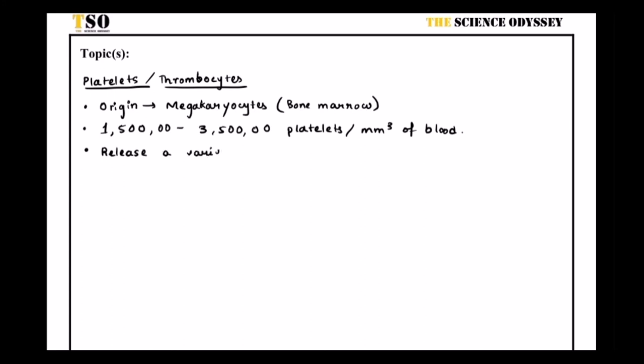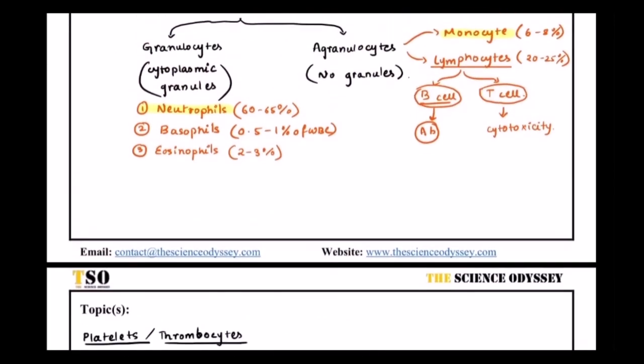Release a variety of factors. And we are going to see what are the factors that are released and how blood clotting actually proceeds. Factors during clotting. And if there is a reduction of platelets, then that might cause some clotting disorders.